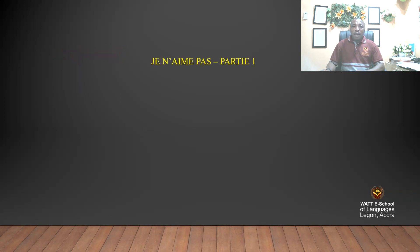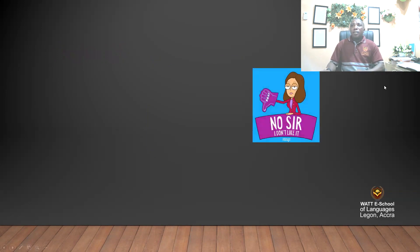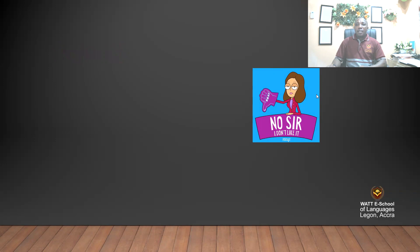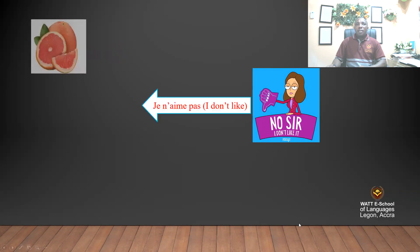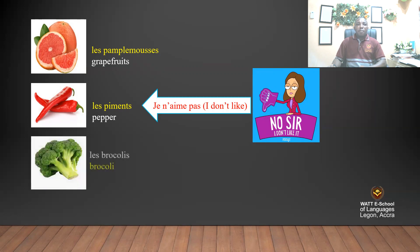I don't like — Part One. You can see the image to say that I don't like. Je n'aime pas les pamplemousse — I don't like grapefruits. Je n'aime pas les piments — I don't like pepper. Je n'aime pas les brocolis — I don't like broccoli.